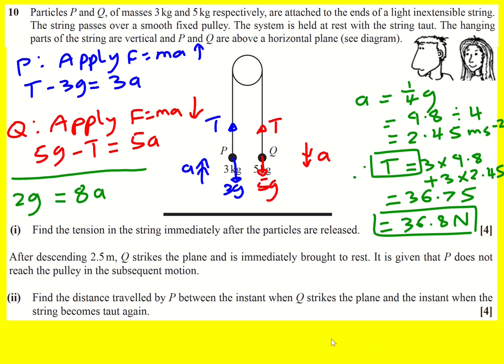On to part two. So we're told after descending 2.5 meters Q strikes the plane and is immediately brought to rest. It's given that P does not reach the pulley in the subsequent motion. So let's just take a look at what's happening.